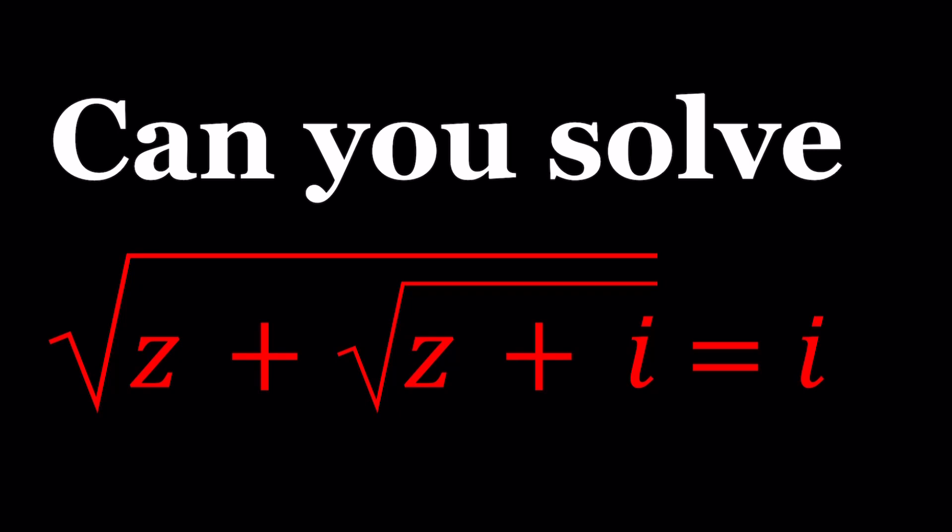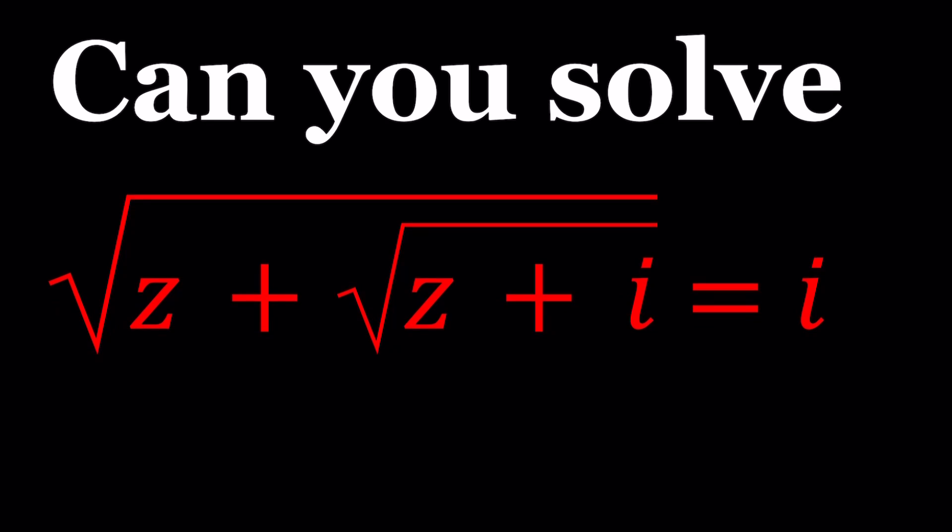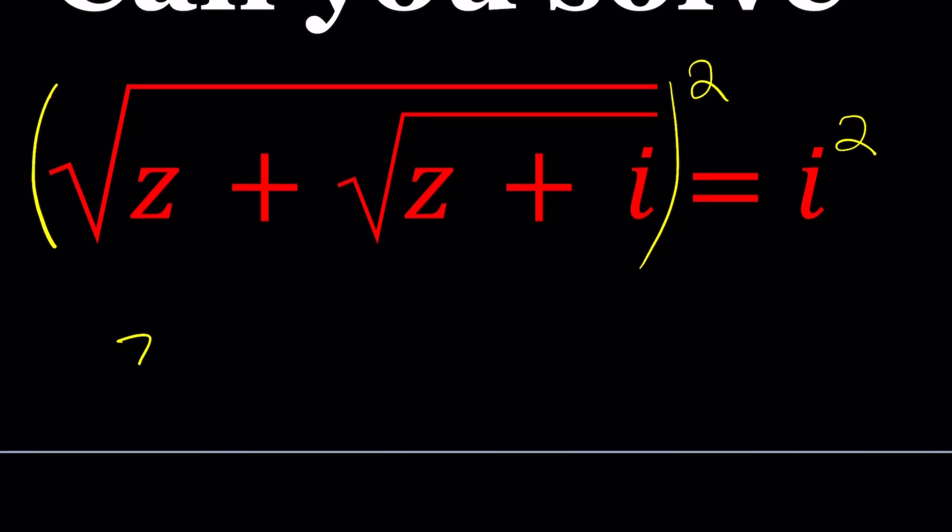So when you have a radical equation with real numbers, what do you do? You square both sides. Obviously, with complex numbers, it's a different story because there are two square roots of a complex number, so we need to be careful, and we also need to check our work. Let's go ahead and start by squaring both sides. The squaring on the left basically takes out the outer square root, giving us z plus the square root of z plus i equals i squared, which happens to be negative 1.